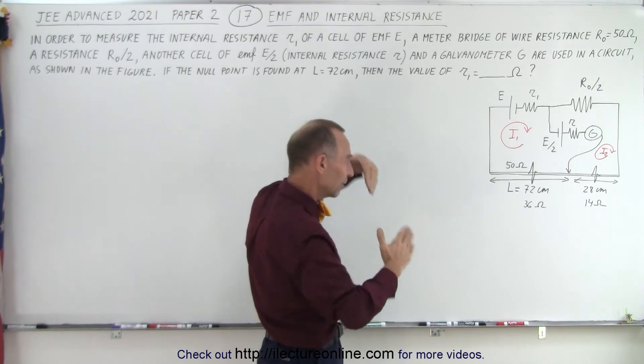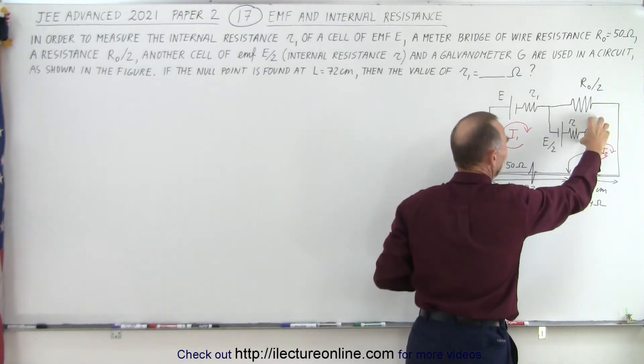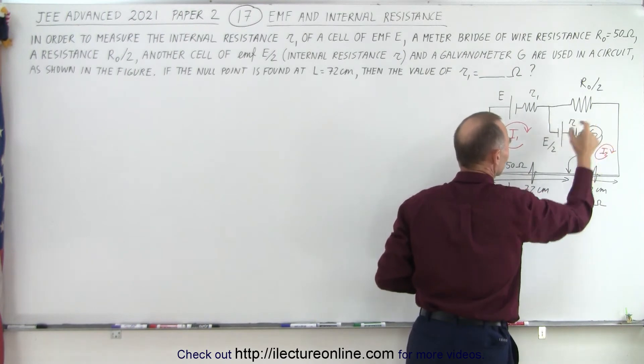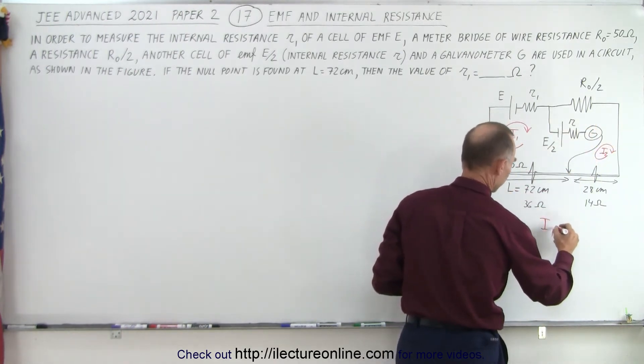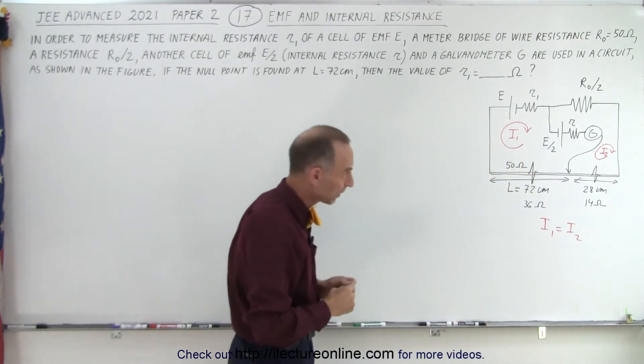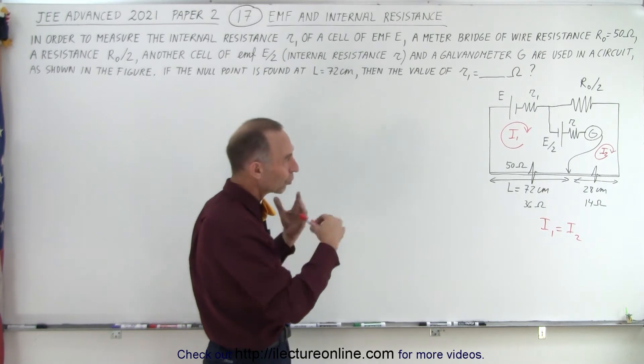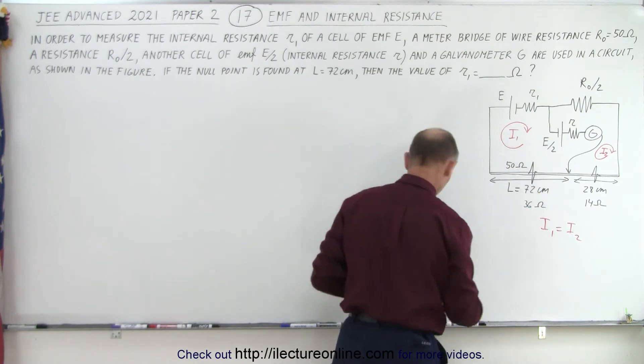When you see the opposing currents, when they're equal to each other, there'll be no current going through this part of the circuit and the galvanometer will show zero current. So at that point, the null point means that I1 equals I2. That's a very important aspect of it. Now we're going to use Kirchhoff's rules to come up with the equations in both of the loops.